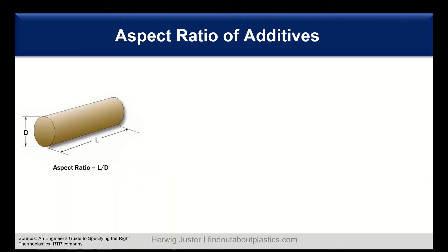First of all, let's start with some definitions. One important definition is the aspect ratio of additives. You can see here on the left a sketch of a fiber with a diameter D and a length L, and the aspect ratio is L divided by D. When you think of an ellipse with sides of length one, the aspect ratio is one to one, meaning it is a circle. The more you change it, the more you get a fiber-like structure.